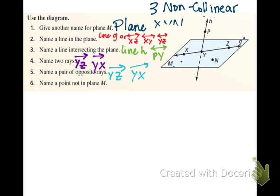Give you a second to write down the last question. It says name a point that is not on the plane. There's only one possible answer. And it is P. The letter P.